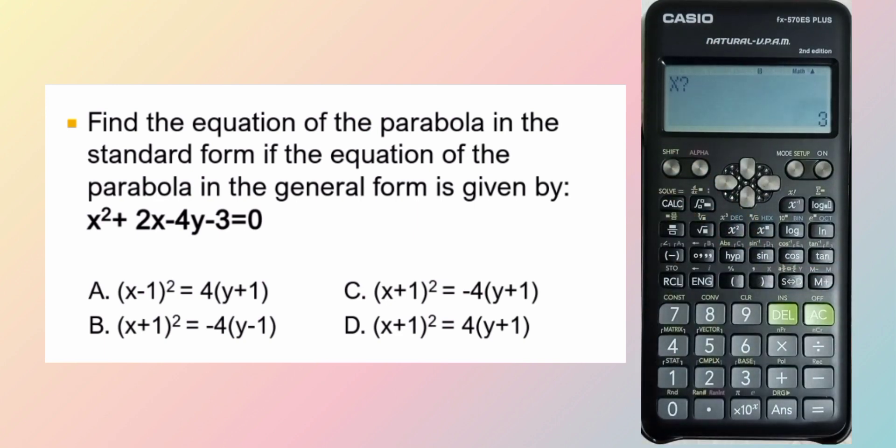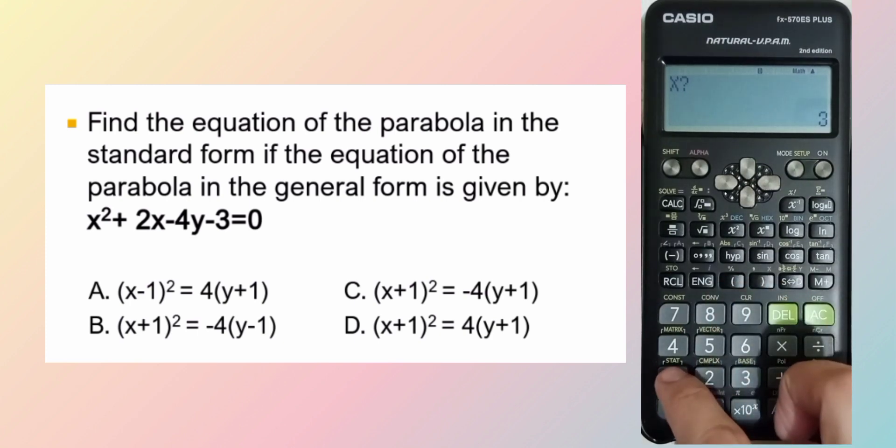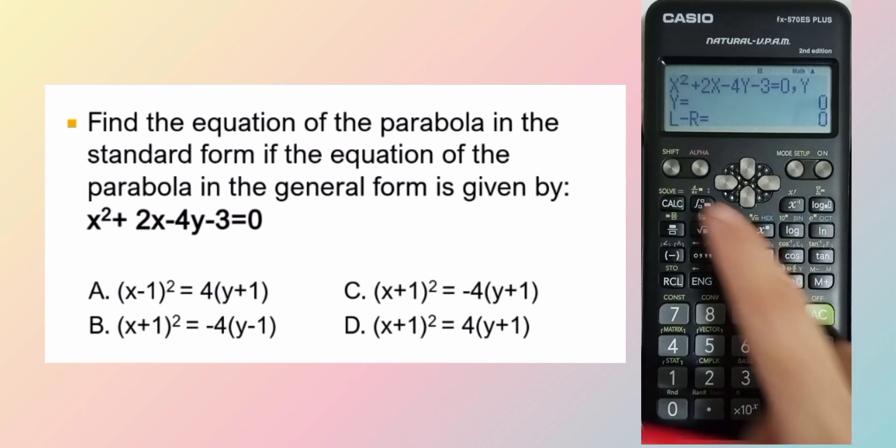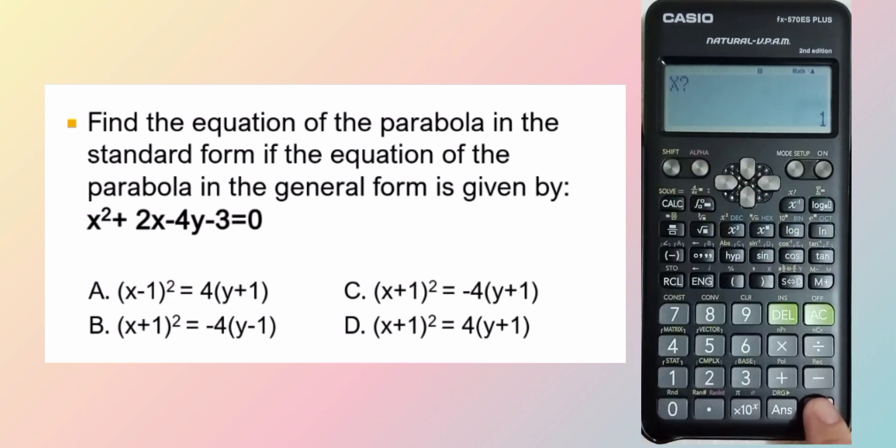What is x? x is equal to, let's say, 1. Solve for y. y is 0. So, 1 is automatic out. Since the option shows na either positive or negative 1. When x is equal to 1, y is equal to 0. So, out na natin si x is equal to 1. Out na natin si x minus 1. Out na si a.